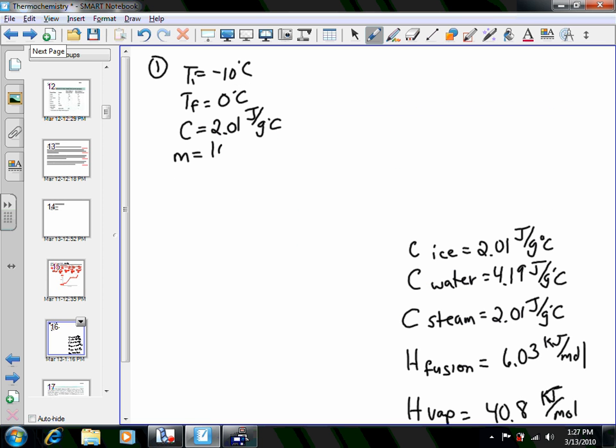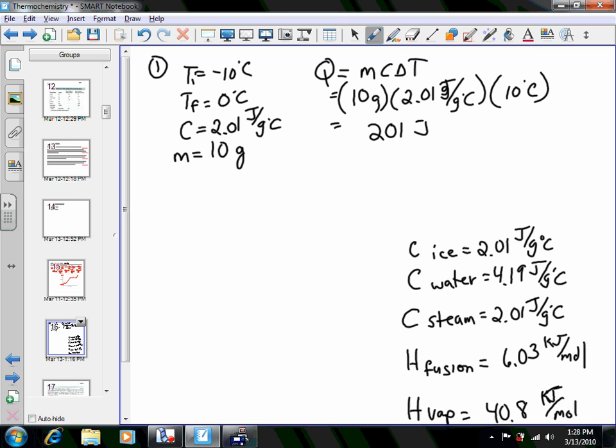So we come in, we'll have a mass of ten grams of ice. And we want to know how much heat is involved. So we have Q is MC delta T. We will have ten grams, heat capacity 2.01 joules per gram degrees Celsius, and final minus initial is a ten degree Celsius change. So that, when you multiply all those together, you would get 201 joules.